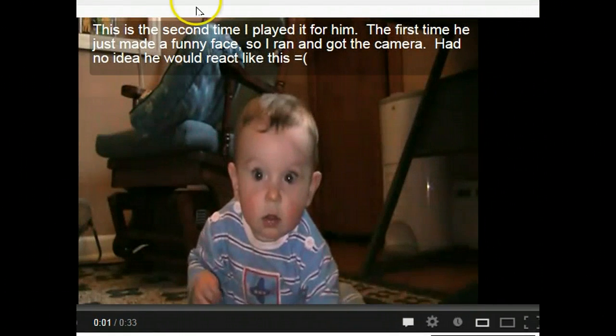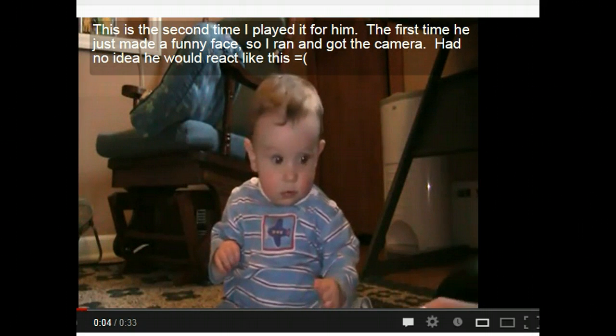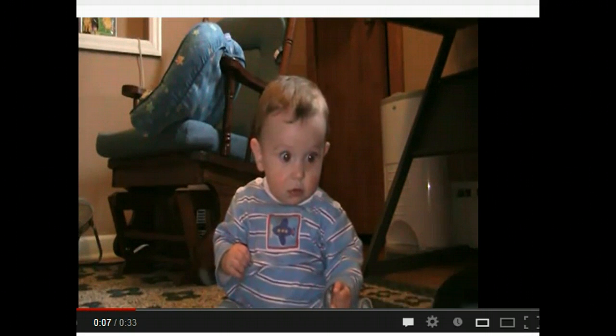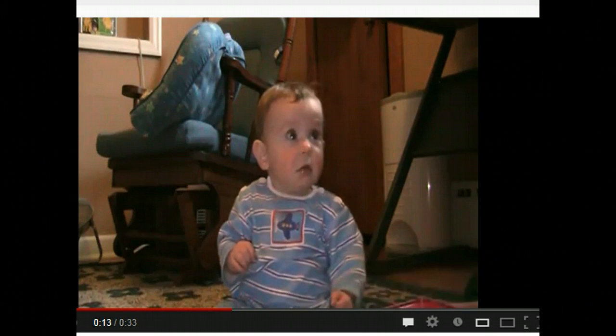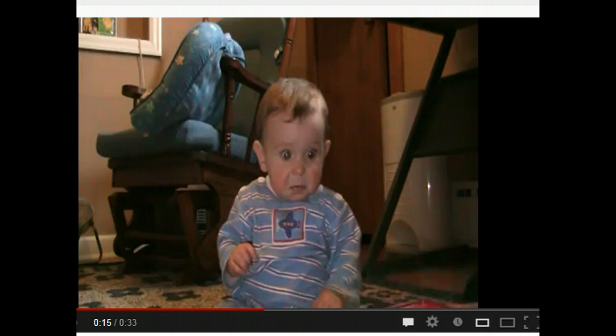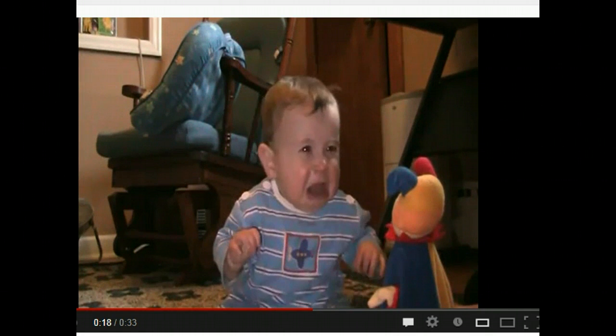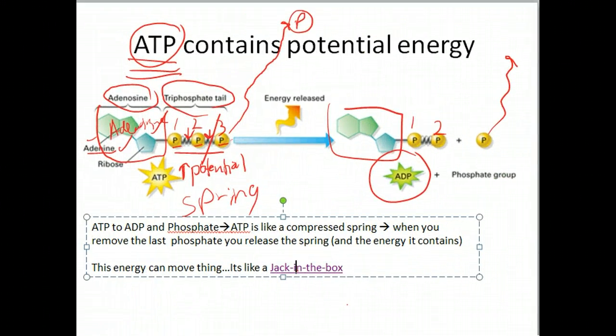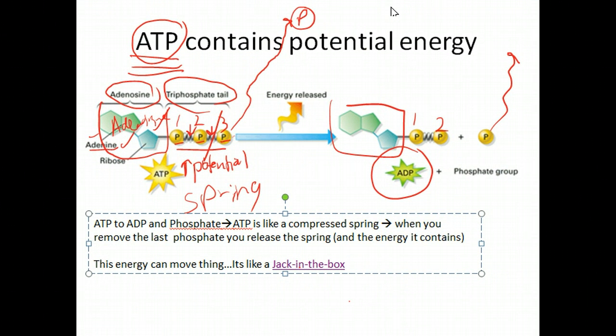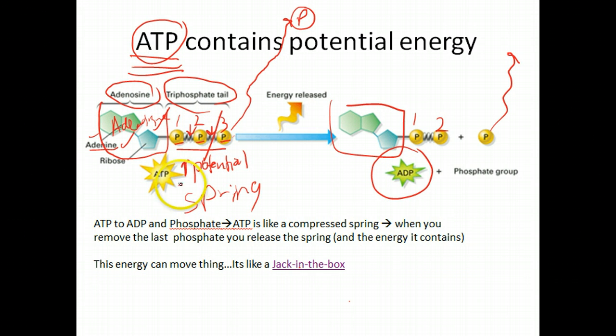So this energy is a lot like a jack-in-the-box. Yeah, so I never get tired of watching that. So in that situation, the jack-in-the-box compressed in the box would be like ATP, lots of potential energy. But when you cleave off that last phosphate, that's the jack-in-the-box springing forward and potentially traumatizing a child.